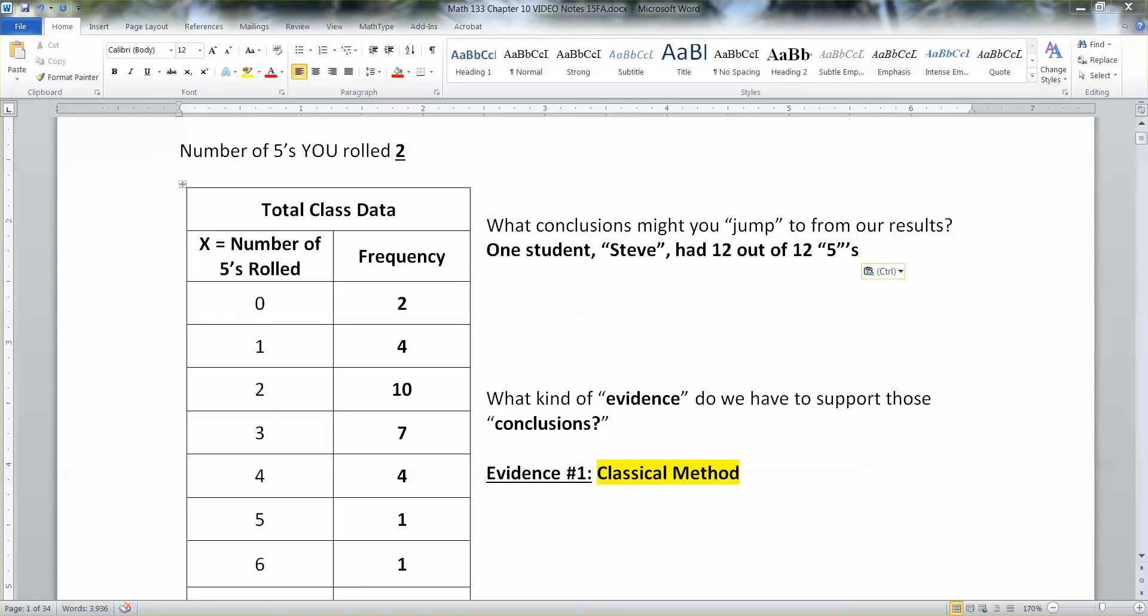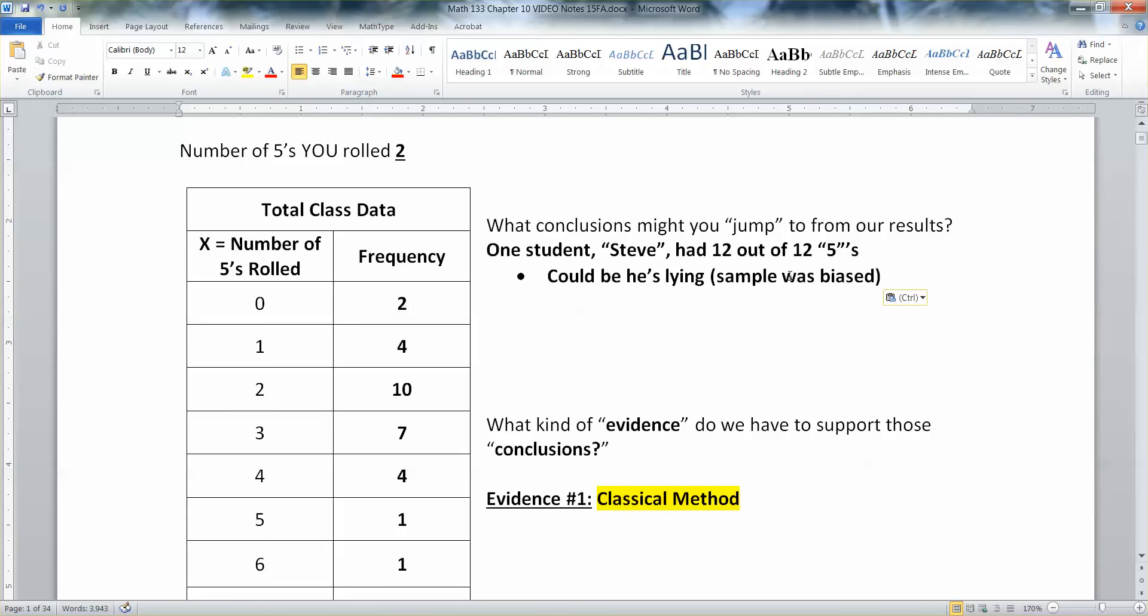Okay, so what are the possibilities? So it could be that he's lying. That would mean that we had a biased sample. Sample is biased. He knew what we wanted. He faked his results. He purposely made it land on five every time. So that's possible. But we're going to assume in general that that's not happening.